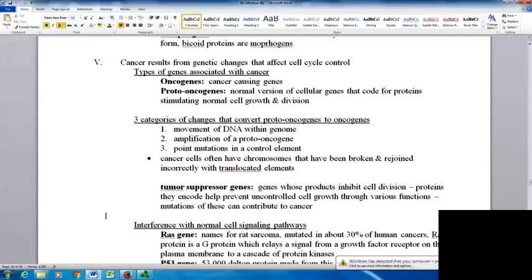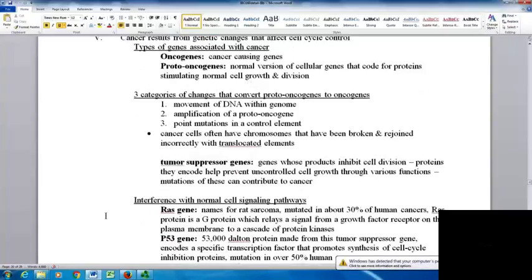Tumor suppressor genes are genes with products that inhibit cell division. The proteins they encode help prevent the cell cycle from going out of control through various functions, so mutations in these can contribute to cancer.